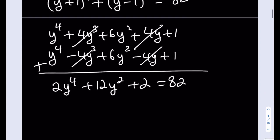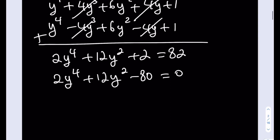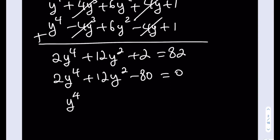Beautiful. Let's go ahead and subtract 82. This is going to give us 2y to the fourth plus 12y squared minus 80 is equal to 0. Beautiful. Let's go ahead and divide everything by 2: y to the fourth plus 6y squared minus 40 is equal to 0.